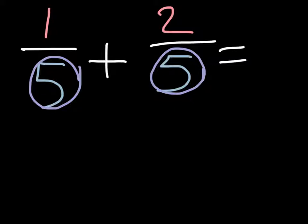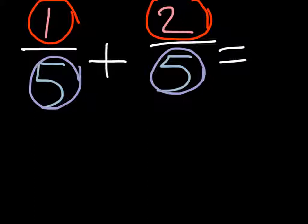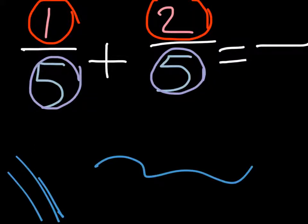The numerator is the number at the top of a fraction. How you add fractions is, you first start with the numerator. In this case, 1 plus 2. 1 plus 2 is equal to 3, so therefore the numerator of our answer will be 3.